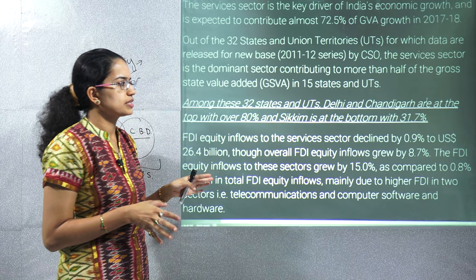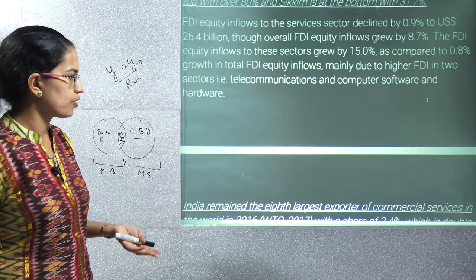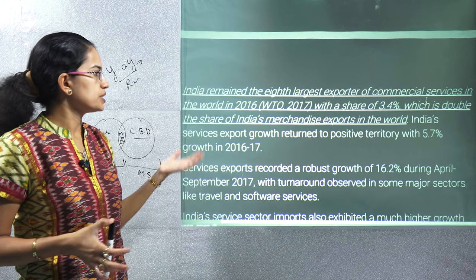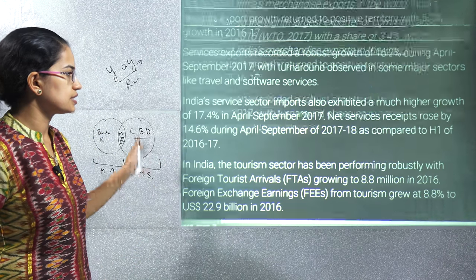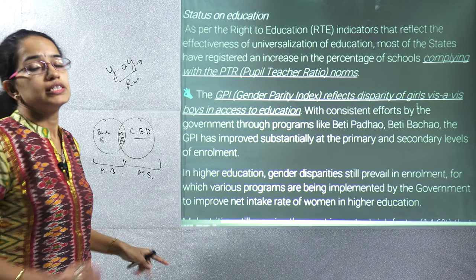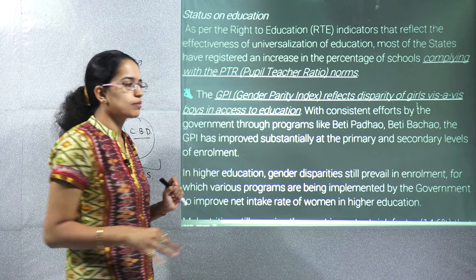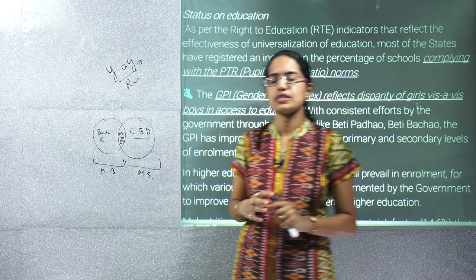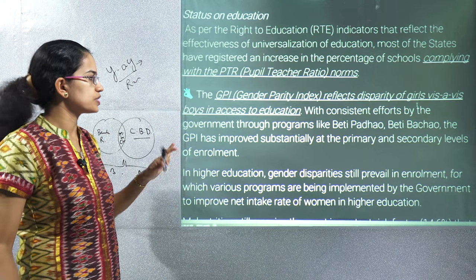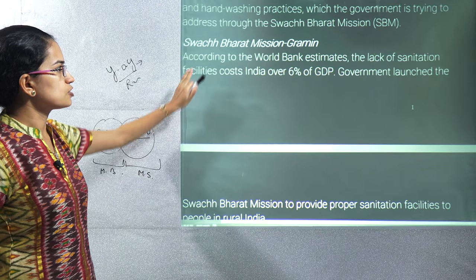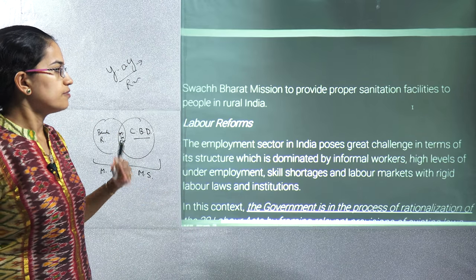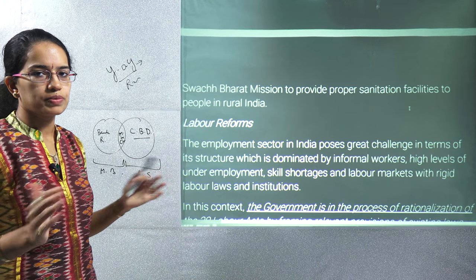The Saubhagya scheme — Sahaj Bijli Har Ghar Yojana — talks about last-mile connectivity for electricity. Among states, Delhi and Chandigarh are the top performing states and Sikkim is the bottom performing state for the service sector. India has remained the eighth largest exporter of commercial services in the world as per 2016. The Gender Parity Index is very important — it reflects the disparity of girls versus boys in access to education. Under Swachh Bharat Mission there are rural and urban versions; the rural version talks about ODF — Open Defecation Free — regions.